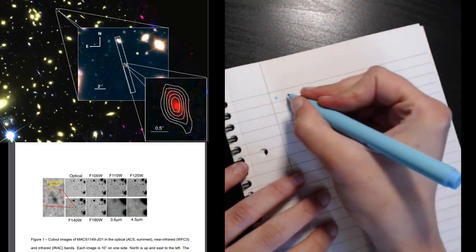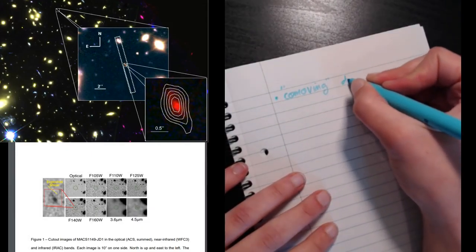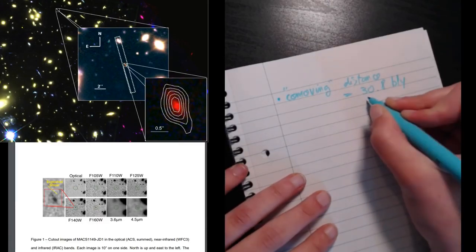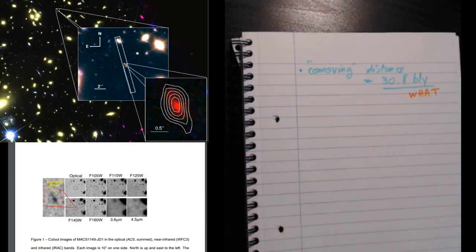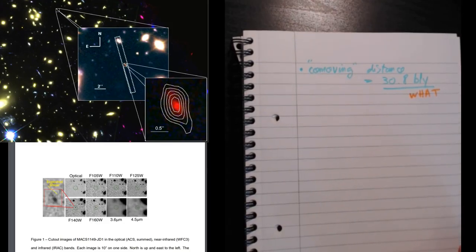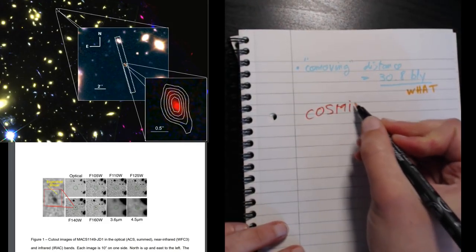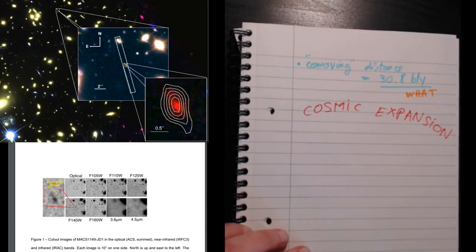Another interesting fact about this galaxy is that it is located at a straight line distance of what cosmologists call co-moving of 30.8 billion light-years. Now you might be wondering, how is that possible? How can the galaxy be 30 billion light-years away if the universe itself is only 13.7 billion years old? The answer to this is a wonderful process called cosmic expansion.